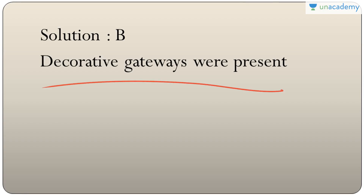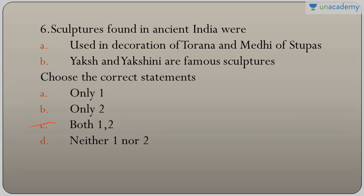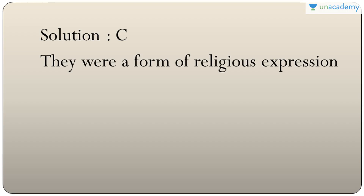Question six: sculptures found in ancient India were used in decoration of Torana and Medhi of Stupas, and Yaksha and Akshini are famous sculptures. Both statements are correct, so the answer is C — both one and two. They were also a form of religious expression.